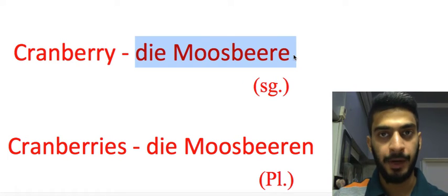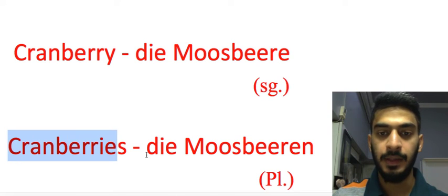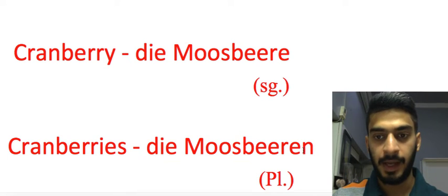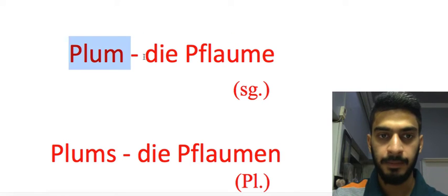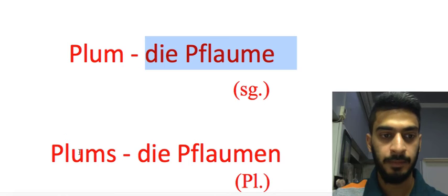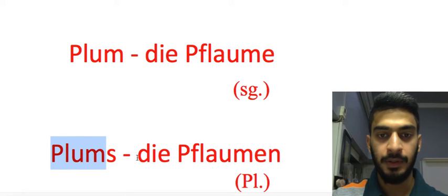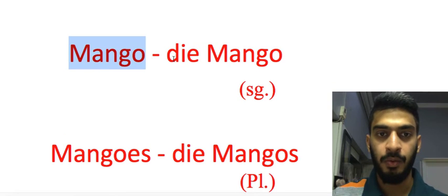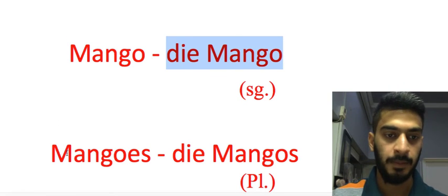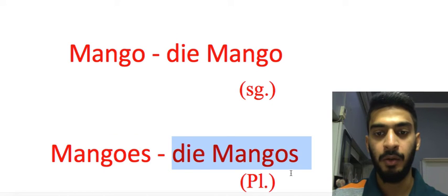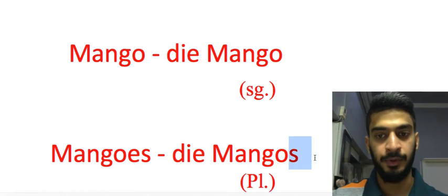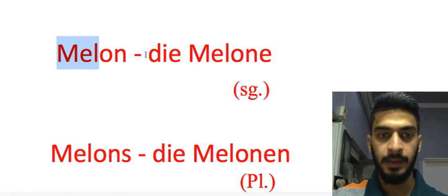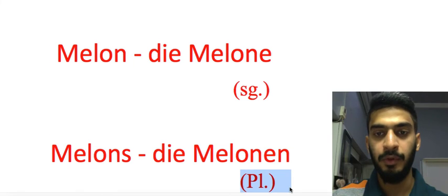Cranberry — 'die Moosbeere', cranberries — 'die Moosbeeren' — extra 'n' at the last. Plum — 'die Pflaume' singular form, plums — 'die Pflaumen' plural form — extra 'n' at the last. Mango — 'die Mango' singular form, mangoes — 'die Mangos' plural form — extra 's' at the last position. Melon — 'die Melone' singular form, melons — 'die Melonen' plural form — again extra 'n' at the last.